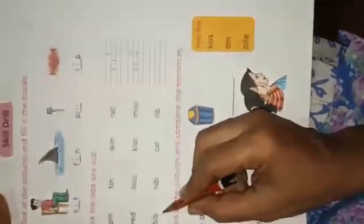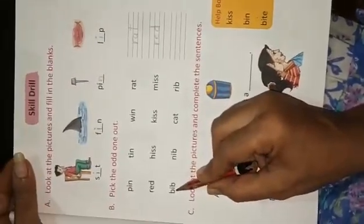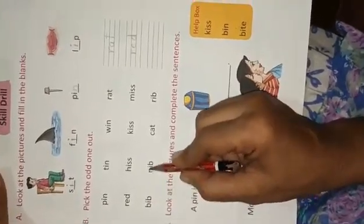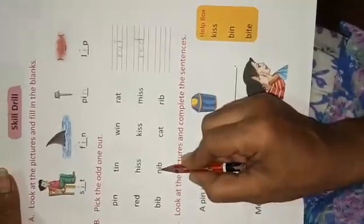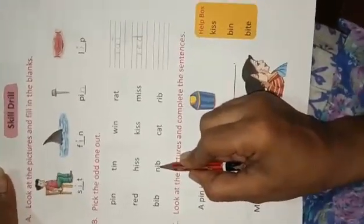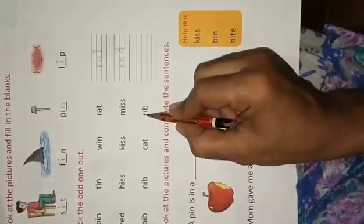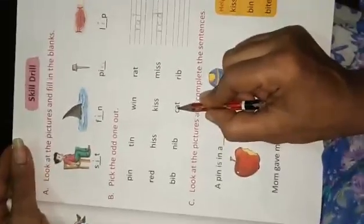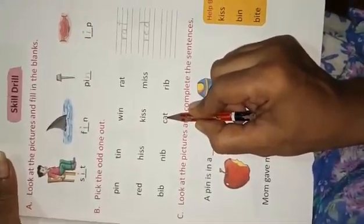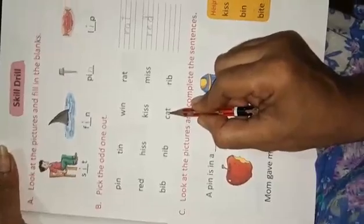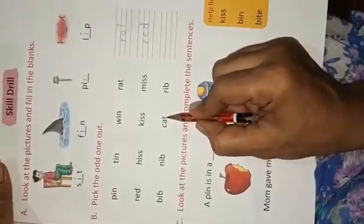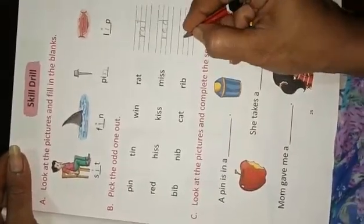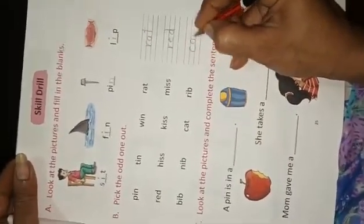And now, R-I-B rib have I vowel, N-I-B nib have also I vowel, and rib have also I vowel. But this word have no vowel I, this word have A vowel. C-A-T cat. So this one, this is odd one. So we write here C-A-T cat.